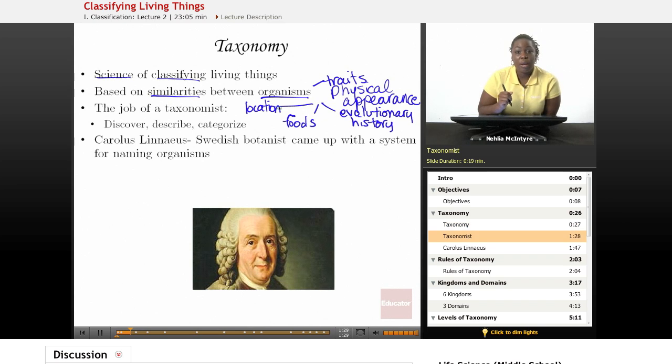So the scientist that actually studies taxonomy and has to classify organisms is called a taxonomist. So the job of a taxonomist is to discover, describe, and categorize all living organisms.